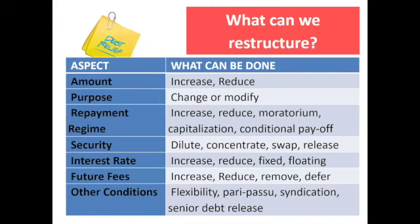So what can we restructure? These are the aspects of the loan open for restructure. Number one, we can restructure the amounts — either increase or reduce them based on the dynamics at hand. We can also restructure the purpose — change or modify it. For example, a loan for a car can be redirected to complete a house. All you have to do is notify the bank so the purpose on paper is changed, because the purpose must fit the borrower's appetite. We can also adjust the repayment regime — increase, reduce, ask for a moratorium, capitalization, or conditional payoff.